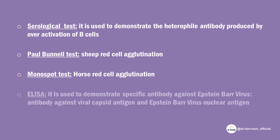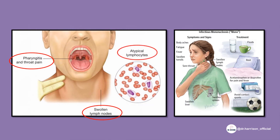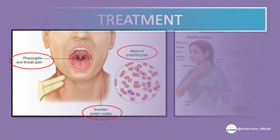ELISA is used to demonstrate specific antibody against Epstein-Barr virus, including antibody against viral capsid antigen and Epstein-Barr virus nuclear antigen. Any condition that presents with the triad of pharyngitis, cervical lymphadenopathy, and atypical lymphocytosis — the answer is most likely infectious mononucleosis.